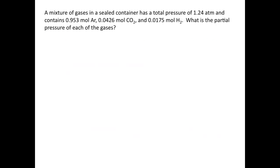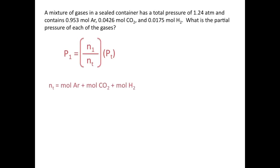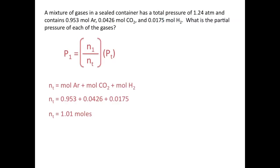Let's try another problem. A mixture of gases in a sealed container has a total pressure of 1.24 atmospheres and contains 0.953 moles of argon, 0.0426 moles of CO2, and 0.0175 moles of H2. What is the partial pressure of each of these gases? The partial pressure equals the mole fraction — moles of that gas divided by total moles — multiplied by the total pressure. The total number of moles is 0.953 plus 0.0426 plus 0.0175, giving us 1.01 moles.